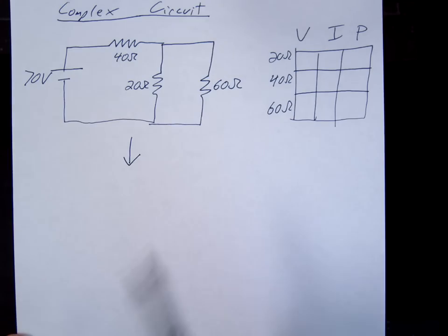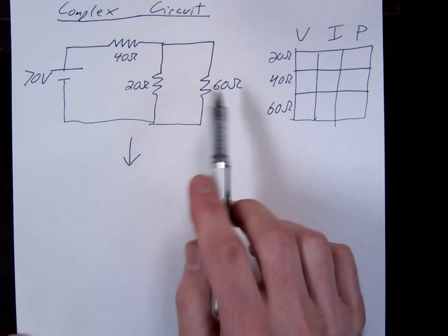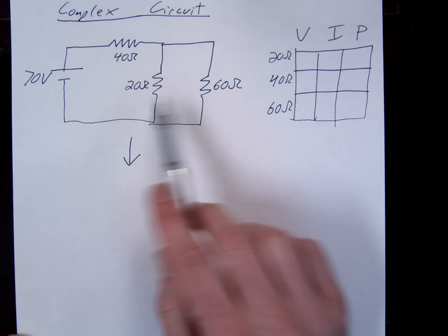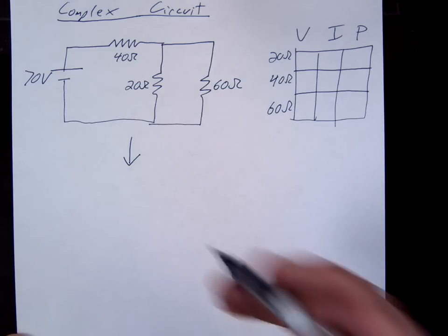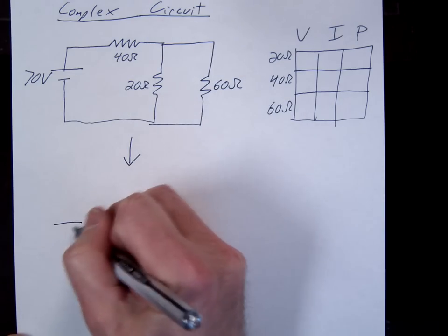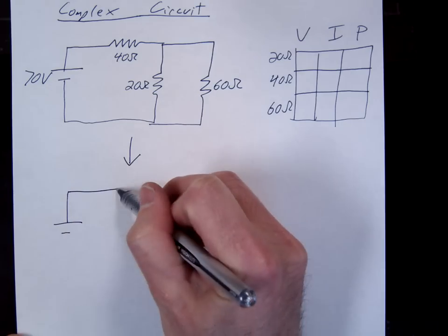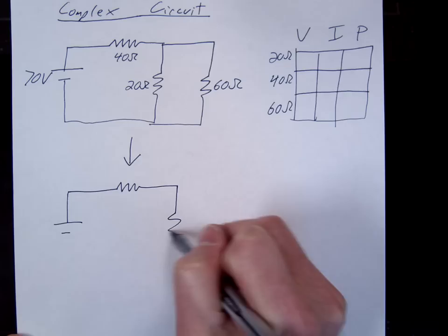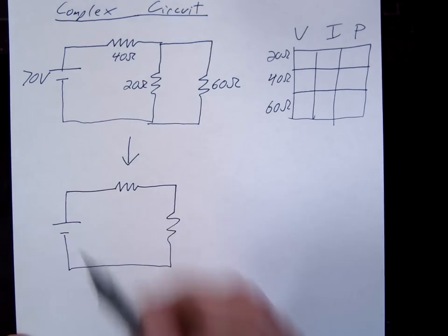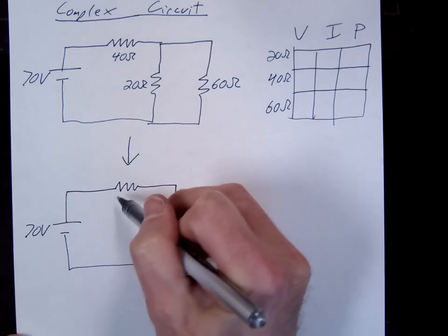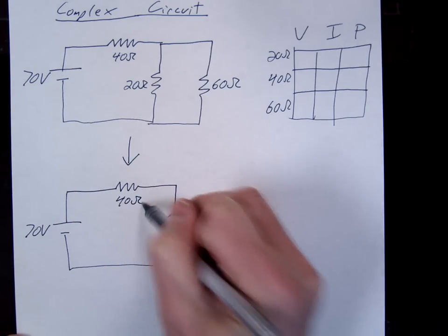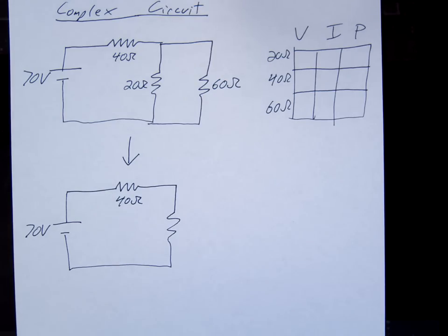So what you want to notice here is if we look at the 20 and the 60, what do you notice about the 20 and the 60? What's the relationship between the two? They're a parallel circuit, right? So 20 and 60 are a parallel circuit. So what we're going to do is we're going to simplify the circuit a little bit, not completely, but just the 20 and 60. So everything else we're going to leave the same, the 20 and the 60 were not. So on your paper, can you go ahead and solve that for me? That's a parallel circuit. How do we solve parallel circuits?